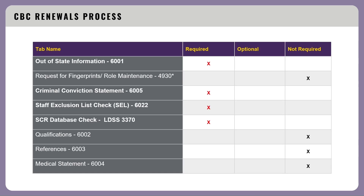For CBC renewals, the forms with a red X must be completed and submitted for all individuals whose current CBC approval will expire within 364 days. Forms with a black X are not required for renewals. It is important to note that while the 4930 form does not have to be uploaded into FAMS, fingerprints are still required to initiate the CBC renewal.